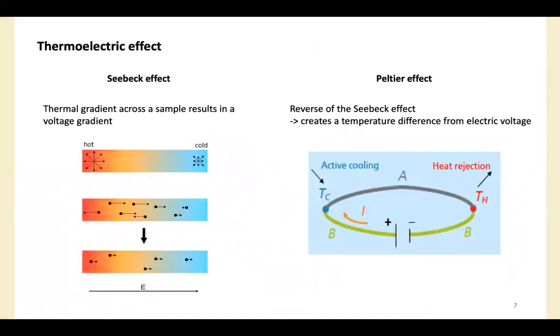There are two representative thermoelectric effects: Seebeck effect and Peltier effect. Seebeck effect was discovered by German physicist Thomas Seebeck. The Seebeck effect is that a thermal gradient across a sample results in a voltage gradient. The absolute value of average velocity of charge carriers is higher in the warm end, therefore the effective diffusion towards from warm end to the cold end.